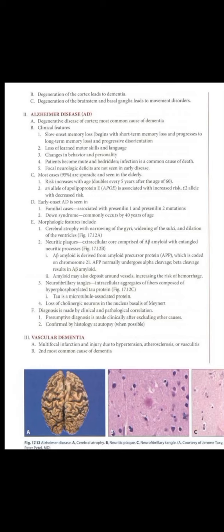Neuritic plaques are extracellular deposits with a core comprised of amyloid beta (Aβ), surrounded by entangled neuritic processes. Aβ amyloid is derived from amyloid precursor protein (APP), which is coded on chromosome 21. APP normally undergoes alpha cleavage, but beta cleavage results in the production of amyloid beta.